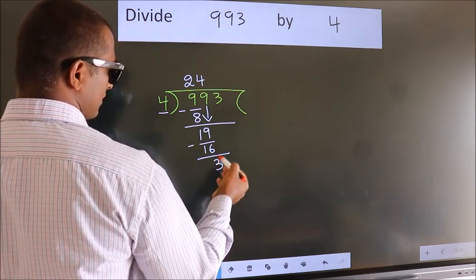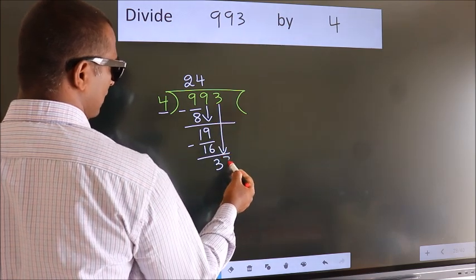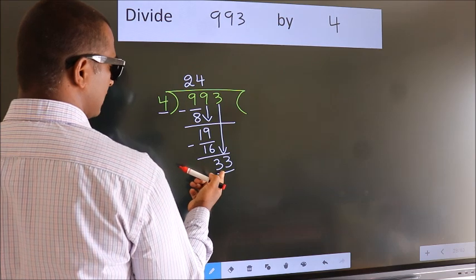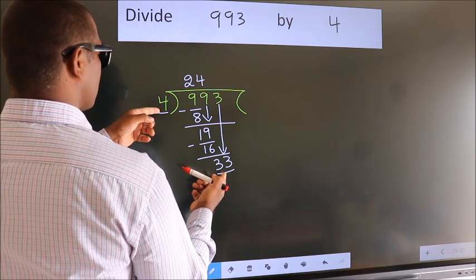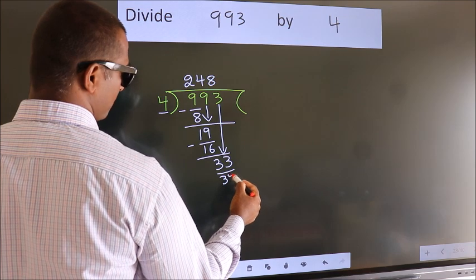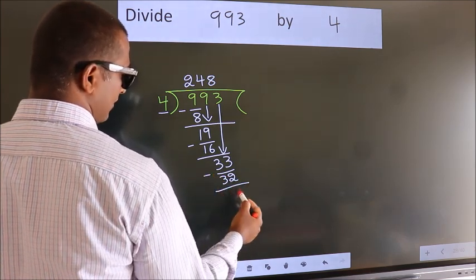After this, bring down the beside number, so 3 down, so 33. A number close to 33 in 4 table is 4 eights, 32. Now we subtract, we get 1.